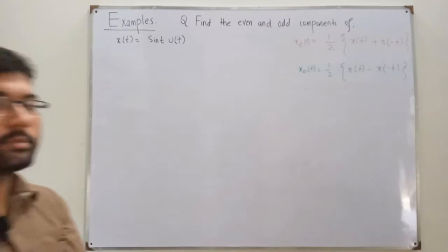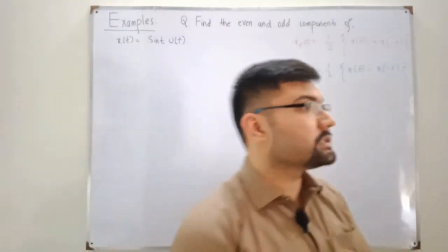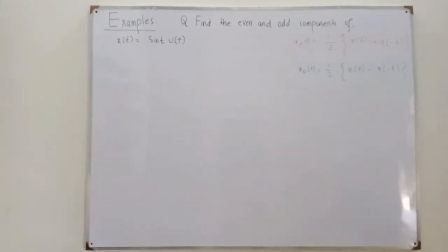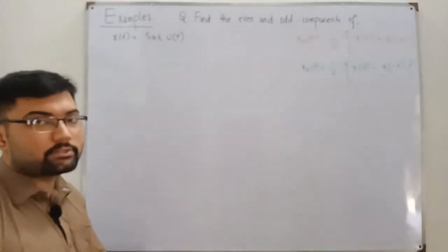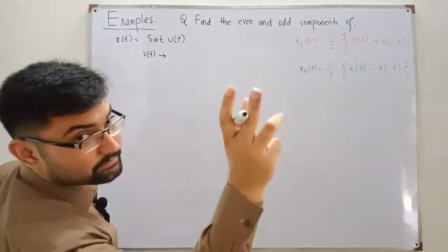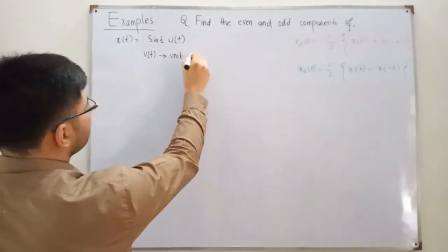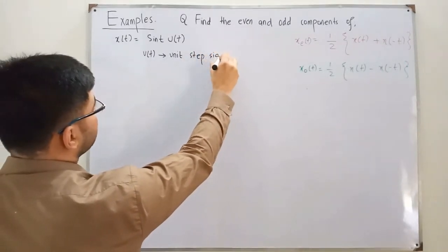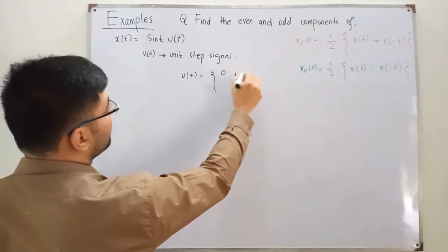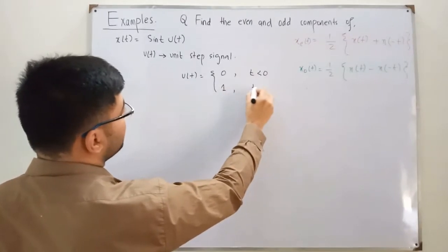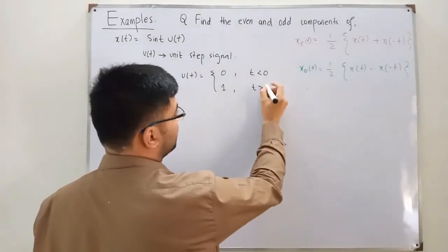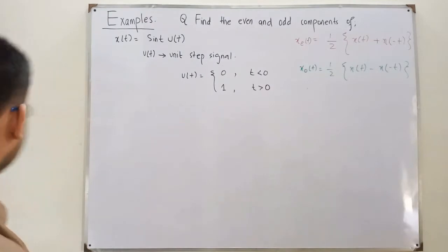Sine of t you already know. u(t) you also know from basic mathematics — you would have seen it in your differential equations or Laplace's course. In signals and systems we also need to look at it. u(t) is the unit step signal. It equals 0 when t is less than 0, and 1 when t is greater than 0. At t=0 it is not defined.